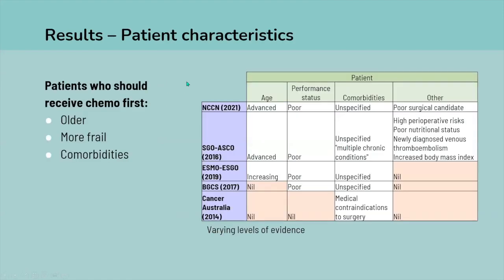For patient characteristics, the factors specified for patients who should receive chemotherapy first were being older, more frail, and having more comorbidities, though there were variations in how these were defined. The American guidelines describe age as 'advanced' in a yes/no manner, whereas the European guidelines describe age more continuously with increasing age. Performance status scores used the word 'poor' but gave no definitions of which specific scores constitute poor. Comorbidities were mentioned by all five guidelines but with no specifics on which actual comorbidities would apply.